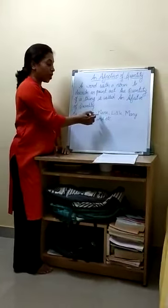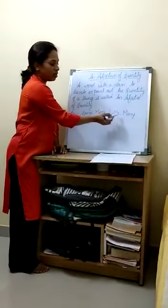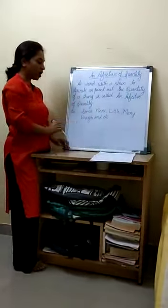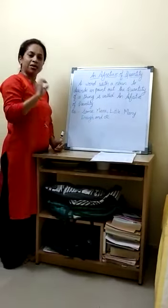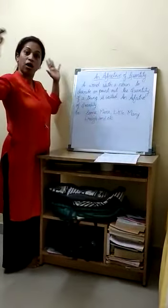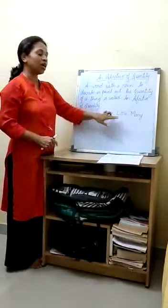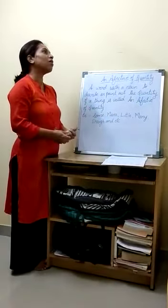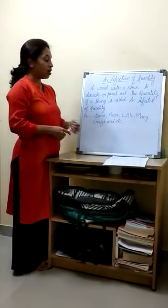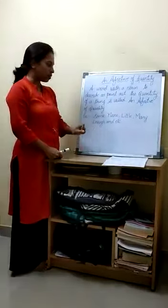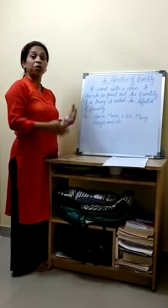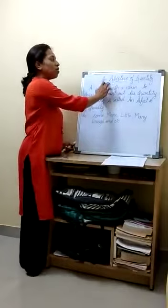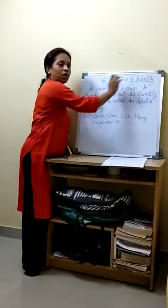For example: some, more, little, many, enough, and so on. Some means very little. More — I have more. Little — I have very little. I have very little chocolate. I have many chocolates. I have enough money. My father has enough money. So these are the examples of adjective of quantity.